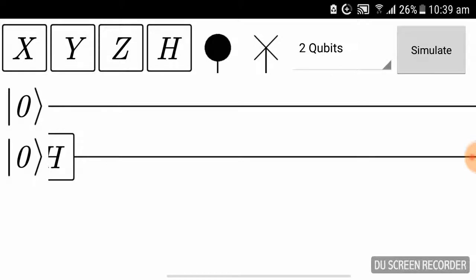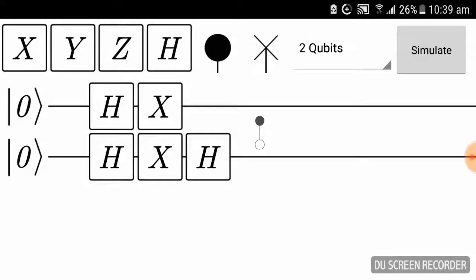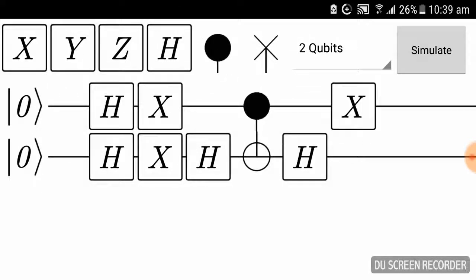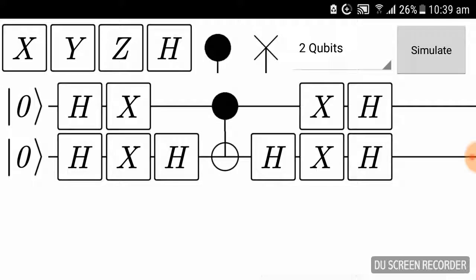Now the Hadamard one, this is known as the diffusion operator that I'm going to create. I'll place X gates, and finally Hadamard gates.